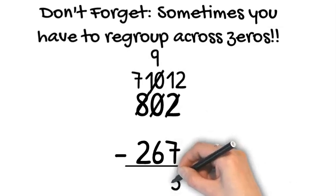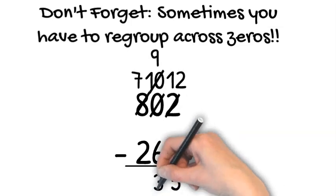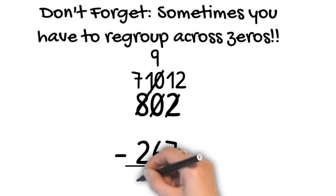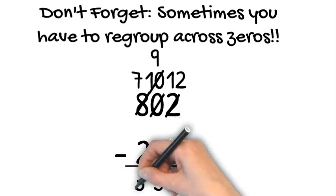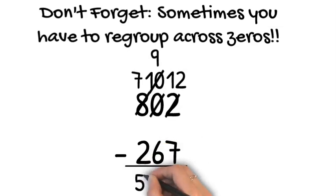The ones place is all set. Now let's try the tens. 9 take away 6 is 3. That works, too. It's another more on top. Let's go move on over to the hundreds. 7 take away 2 is 5. Our answer is 535.